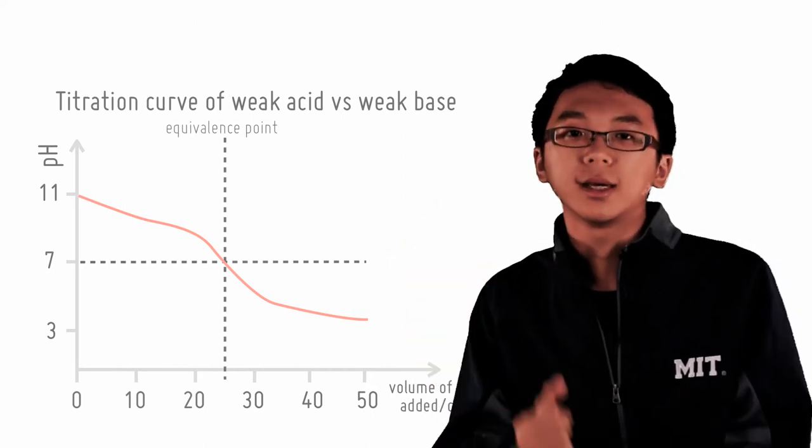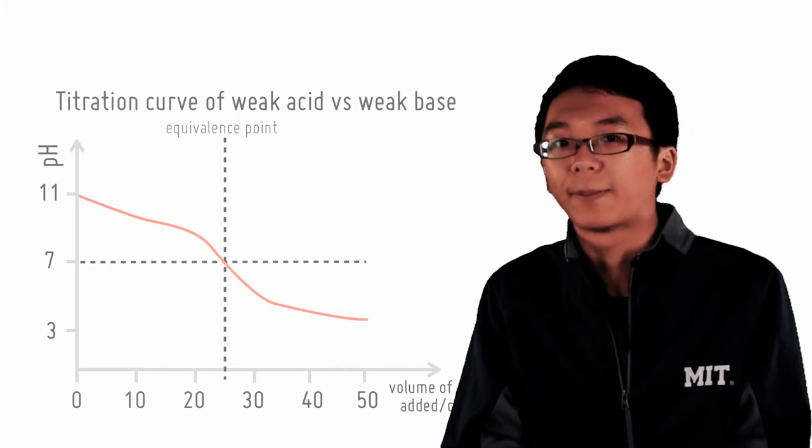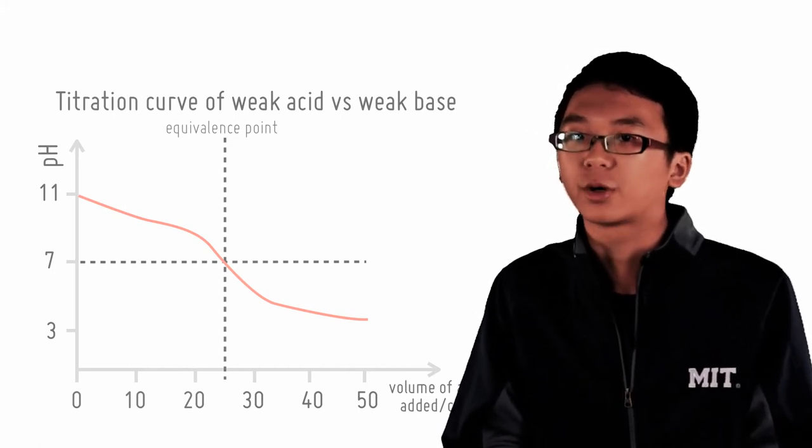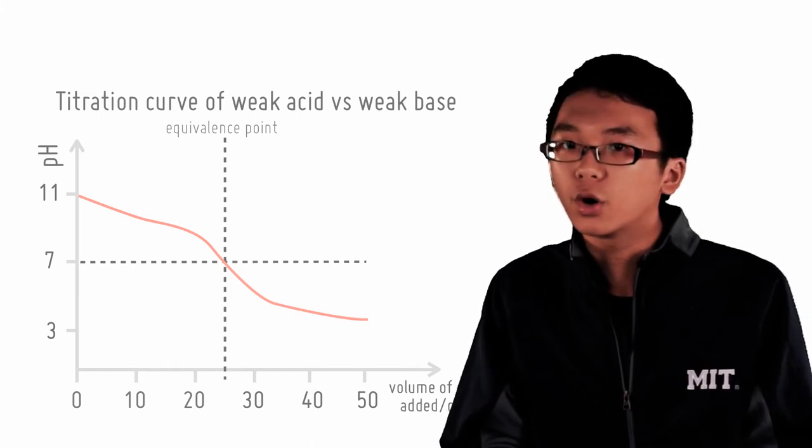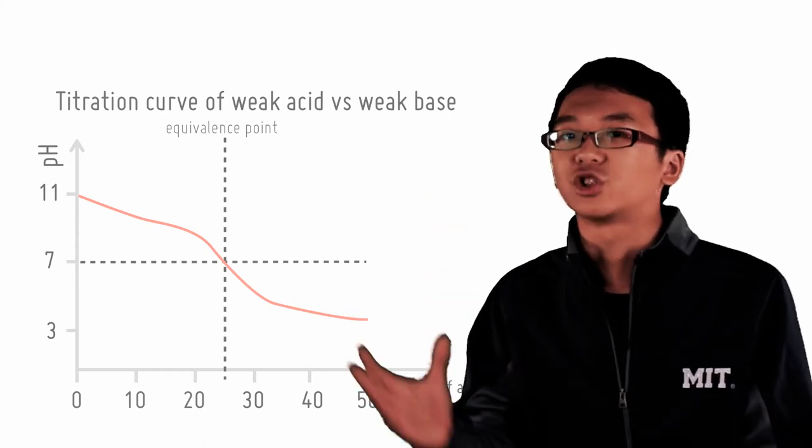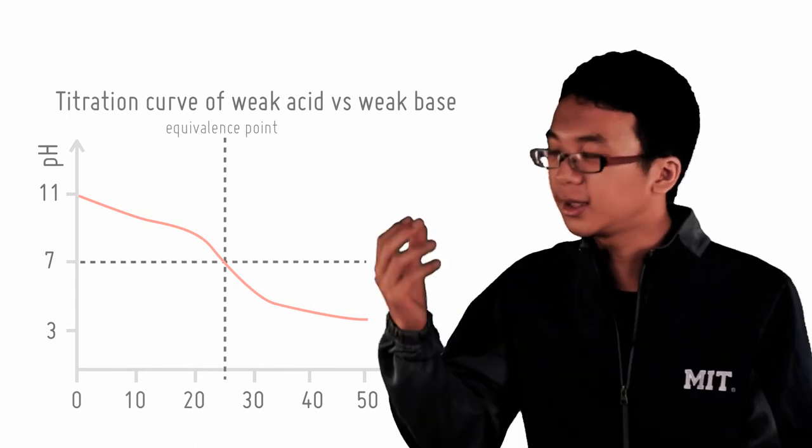Because both are weak, it doesn't form any decent buffer, so there is no maximum buffering capacity observed. Note that for such a titration, because there is no sharp equivalence point, it is very hard to use an indicator. You do not know when exactly it has reached equivalence because the change region is now much larger than the narrow one we are used to.